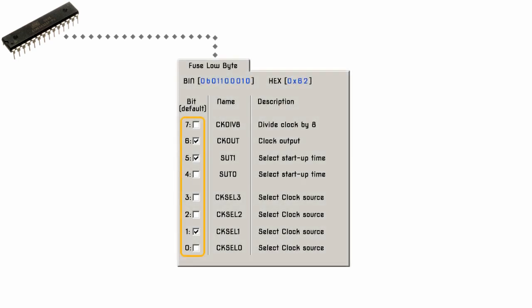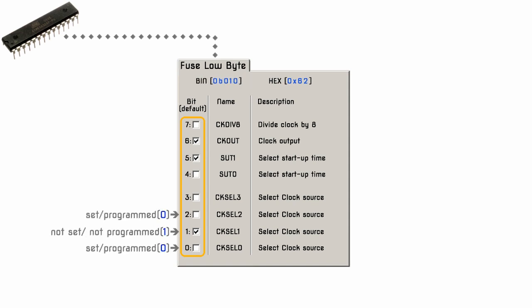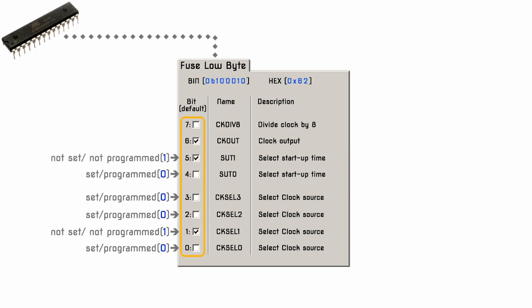Each byte is 8 bits and each bit is a separate setting or flag. When we talk about setting or not setting, programmed or not programmed fuses, we are actually using binary. A 1 means not set or not programmed, and a 0 means set or programmed. When programming the fuses you can use binary notation or, more commonly, hexadecimal notation.